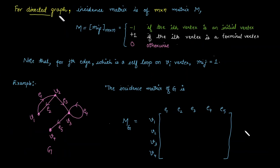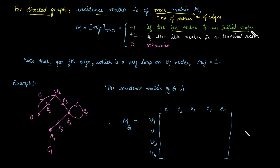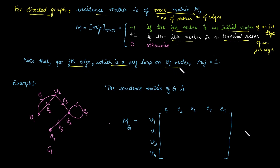Next, for the directed graph: the incidence matrix for a directed graph is of order M cross N, where M represents the number of vertices and N represents the number of edges. The entries are −1, +1, or 0. A −1 indicates that the ith vertex is the initial vertex of the jth edge; a +1 indicates that the ith vertex is the terminal vertex of the jth edge; 0 otherwise. Note: if the jth edge is a self-loop on the ith vertex, we write the entry as +1 rather than −1.